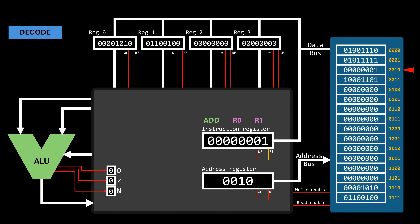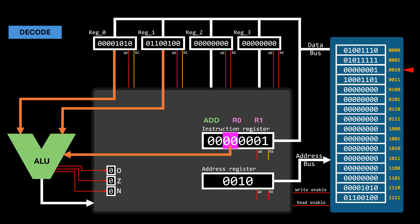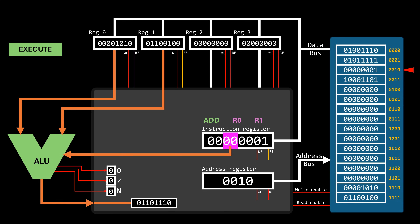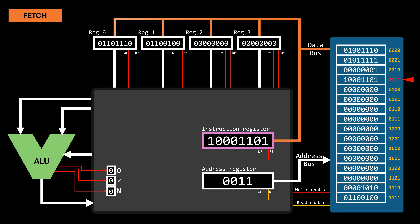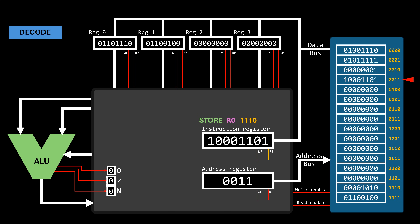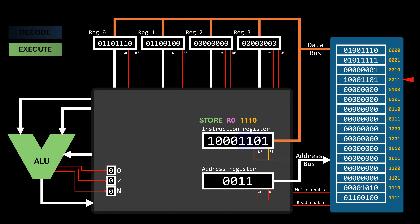The address register is incremented again, pointing to the third instruction. This time, the instruction is an arithmetic operation — specifically an addition between the values in registers 0 and 1, which were loaded in the previous two instructions. The control unit activates the read-enable signal of both registers and uses internal multiplexers to direct both values to the ALU inputs. The ALU also needs the opcode for addition, then outputs the result. The result is temporarily stored in an internal register, giving the control unit time to store the value in register 0. We've come all the way from transistors to creating our own tiny CPU that runs programs.